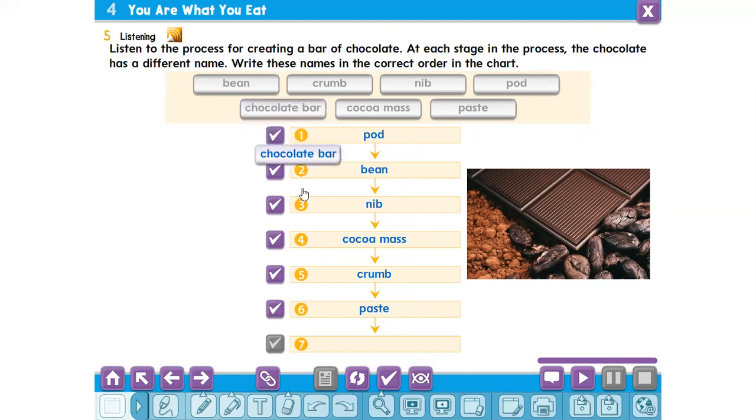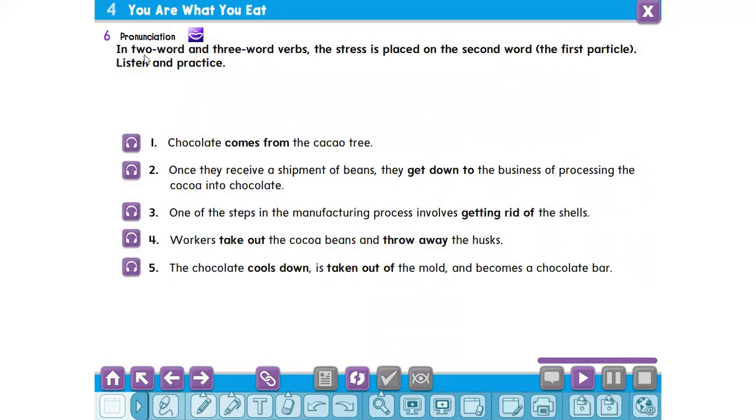Now pronunciation. In two word and three word verbs, the stress is placed on the second word, the first particle. Listen and practice. Number one, chocolate comes from the cacao tree. Number two, once they receive a shipment of beans they get down to the business of processing the cocoa into chocolate. Number three, one of the steps in the manufacturing process involves getting rid of the shells. Four, workers take out the cocoa beans and throw away the husks. Five, the chocolate cools down, is taken out of the mold and becomes a chocolate bar.